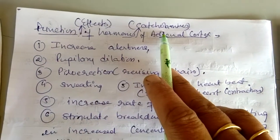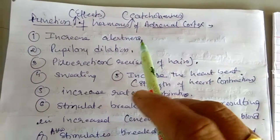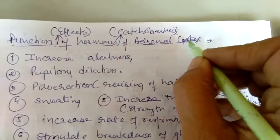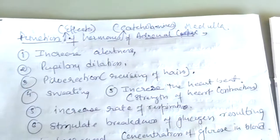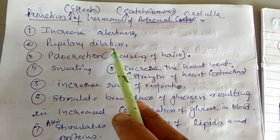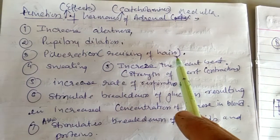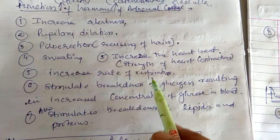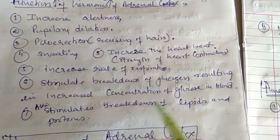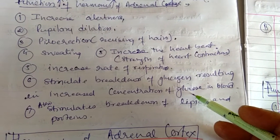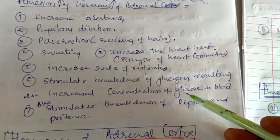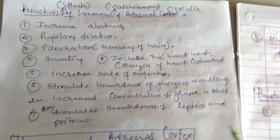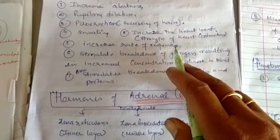The effects of these catecholamines secreted by adrenal medulla: they increase alertness, cause pupillary dilation — the pupils get dilated in emergency conditions — piloerection meaning raising of hair, sweating, palpitation, increased heart rate, increased strength of contraction of the heart, increased respiratory rate, and breakdown of glycogen to glucose for getting more energy in the emergency condition. Glycogen breaks down into glucose under the influence of these hormones, and they also stimulate the breakdown of lipids and proteins to provide more energy. This is the function of hormones of adrenal medulla — adrenalin and noradrenaline.